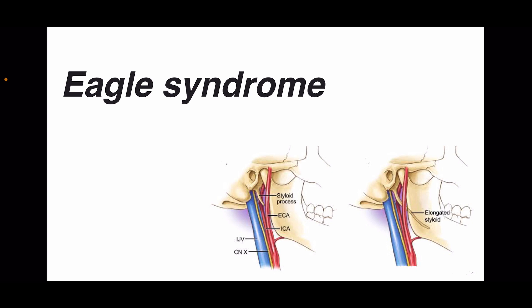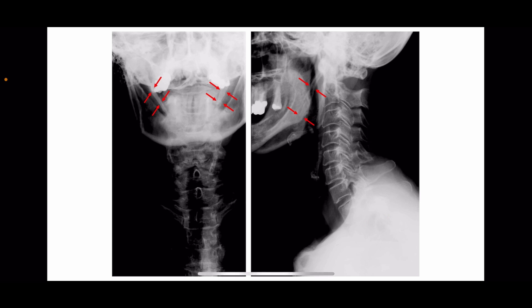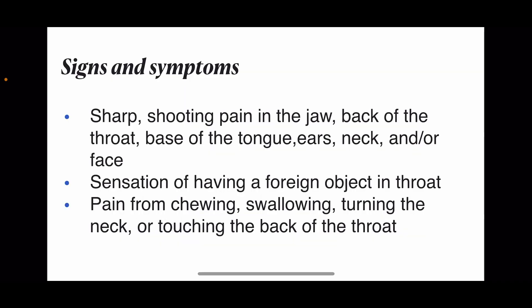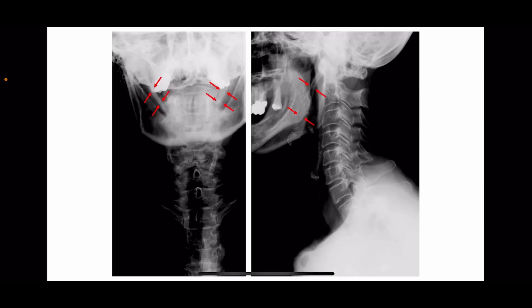In this X-ray, you can see an anteroposterior lateral radiograph of the cervical spine showing ossification of the stylohyoid ligament on both sides. The arrow marks indicate the elongation of the styloid process. Eagle Syndrome occurs due to elongation of the styloid process or calcification of the stylohyoid ligament.